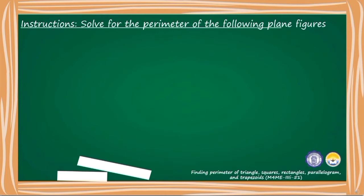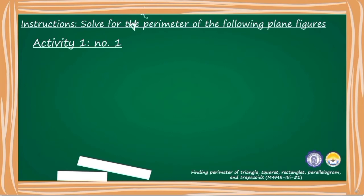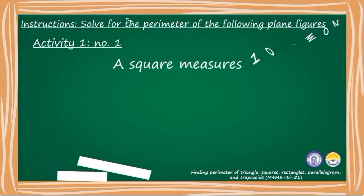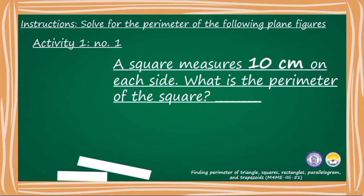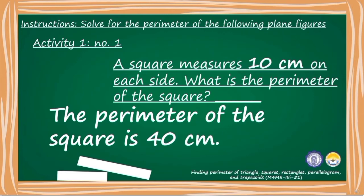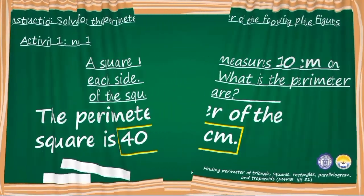Solve for the perimeter of the following plane figures. Activity number 1: A square measures 10 centimeters on each side. What is the perimeter of the square? The perimeter of the square is 40 centimeters.